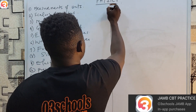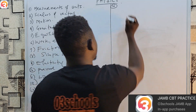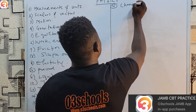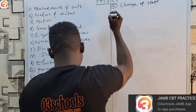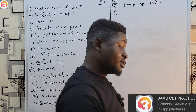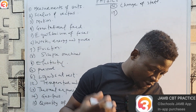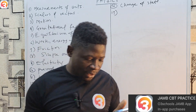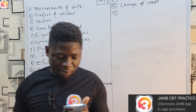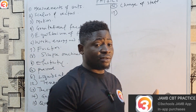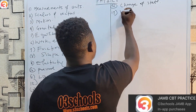The sixteenth topic is change of state. Under change of state, we look at latent heat and specific latent heat of fusion and vaporization, melting, evaporation and boiling, the influence of pressure and dissolved substances on boiling and melting points, and applications of change of state in appliances.